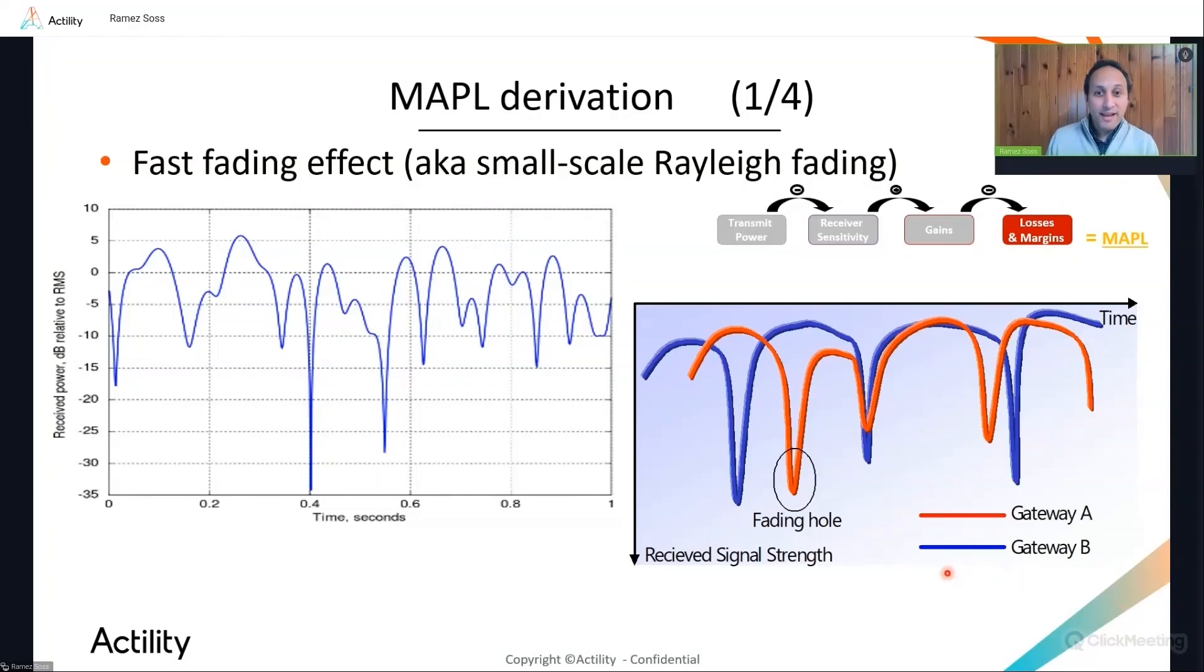The good news is that the overlapping between several gateways allows mitigating part of this fast fading effect for uplink paths. Take the example of the macro diversity of two where uplink packets are received by two gateways. So a fading hole for gateway A would be typically compensated by gateway B and vice versa. Similar positive effect happens with uplink repetitions offering both time and frequency diversity to mitigate the fast fading effects.